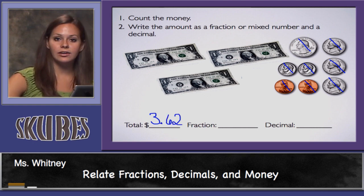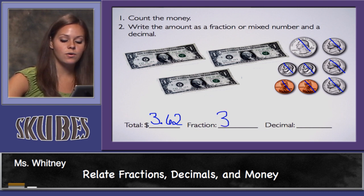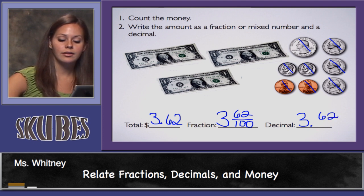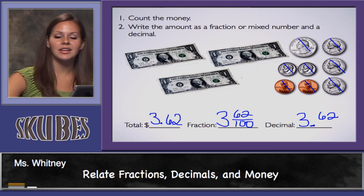As a fraction, I can write a mixed number: three wholes and 62 hundredths. As a decimal, I write three and 62 hundredths. And this concludes our lesson on relating fractions, decimals, and money.